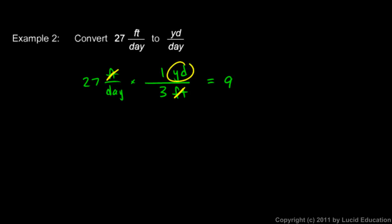9 what? 9 yards per day. You can see the units that remain after all the others have canceled. So you write down 9 yards per day, and that's your answer.